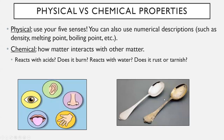The first thing I want to go over is the concept of a physical versus a chemical property. When we talk about properties, we talk about what we can say to describe some kind of object. Physical properties are the ones that you would use your five senses to detect — what you see, hear, smell, feel, and taste. Other physical properties include density, melting point, and boiling point — those numerical descriptions are physical properties as well.